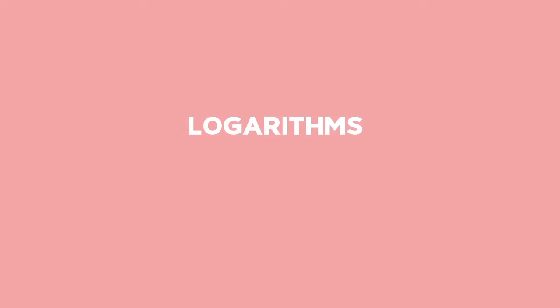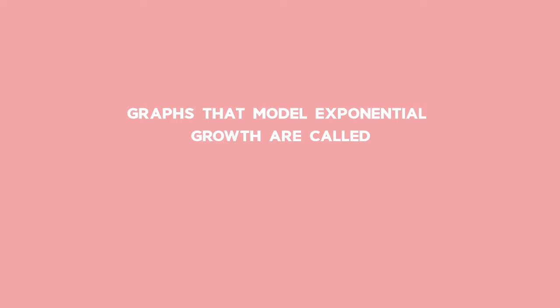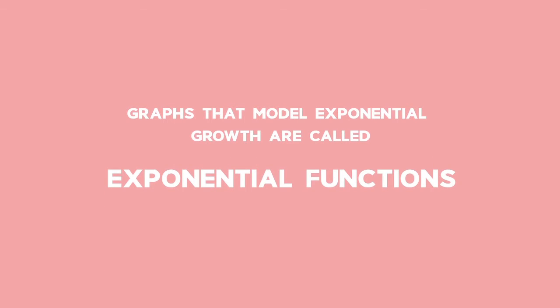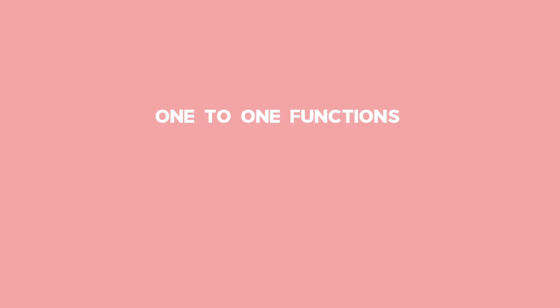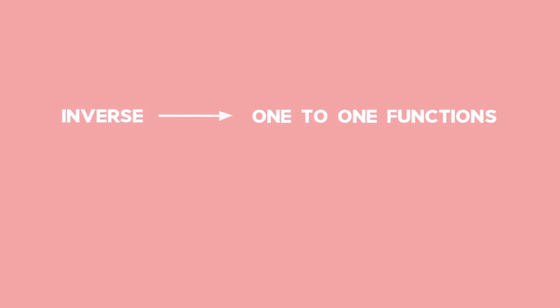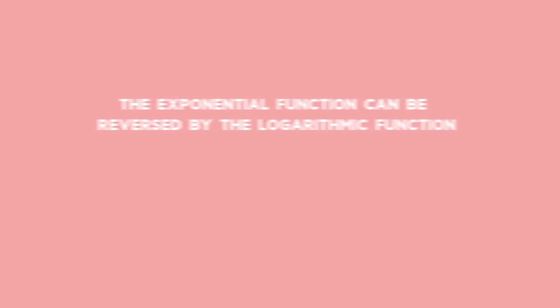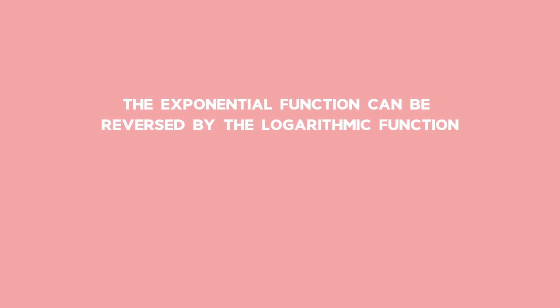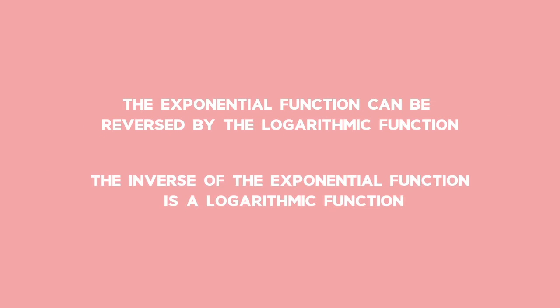You need to understand logarithms before you complete this lesson. Recall, graphs that model exponential growth are called exponential functions. Exponential graphs are one-to-one functions, hence their inverse will be a one-to-one function too. The exponential function can be reversed by the logarithmic function, therefore the inverse of the exponential function is a logarithmic function.